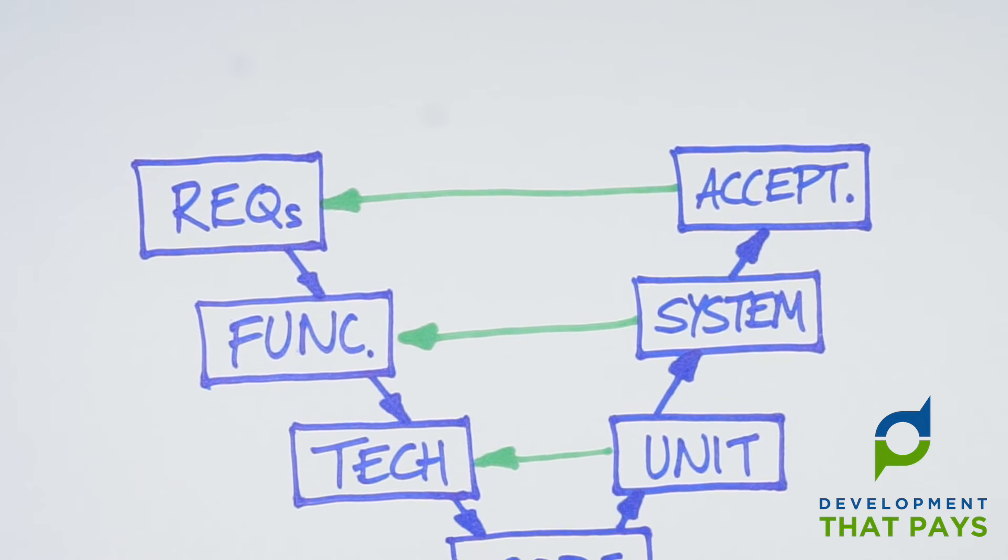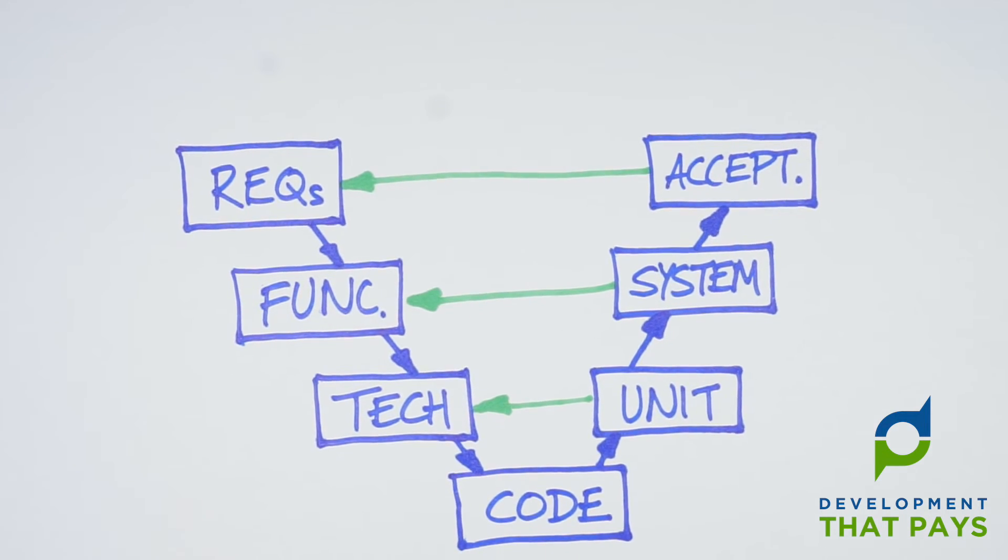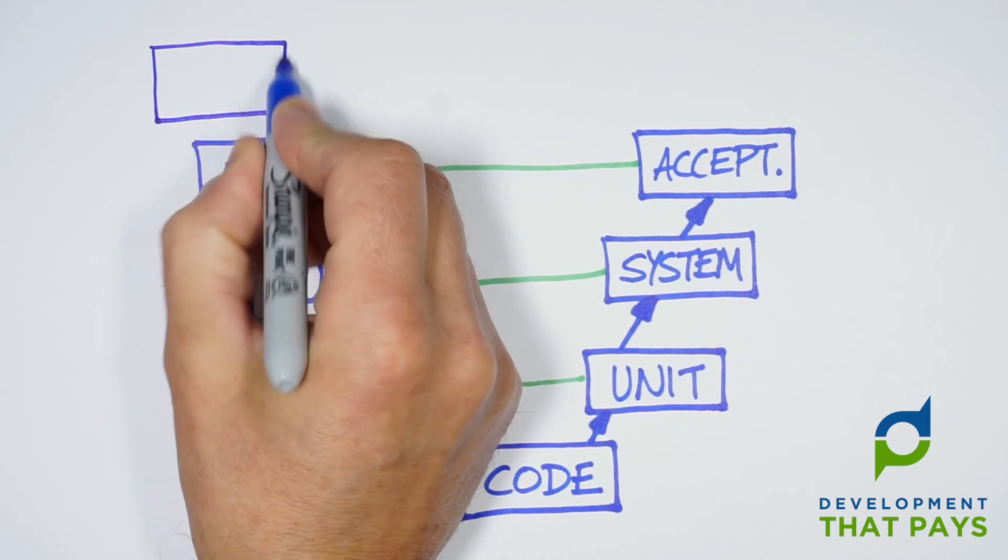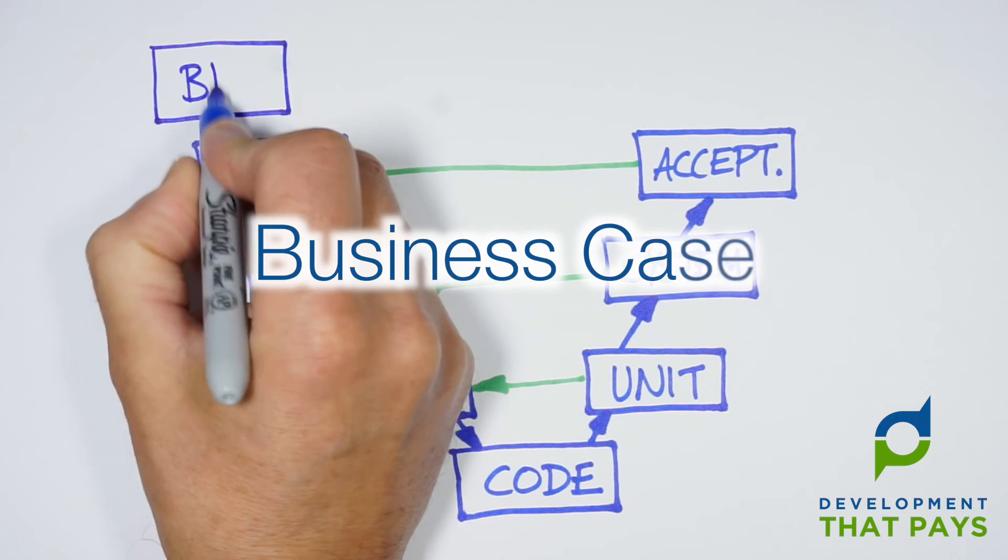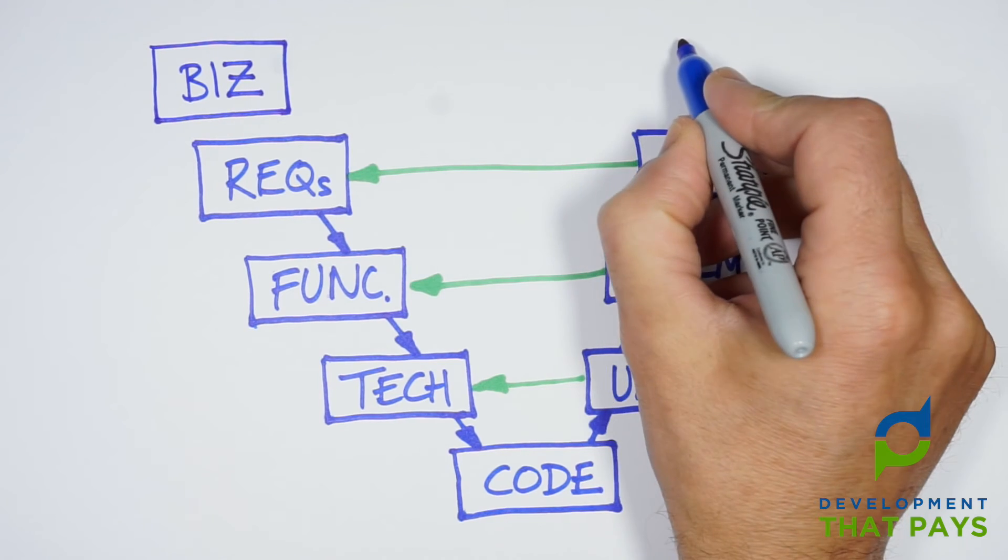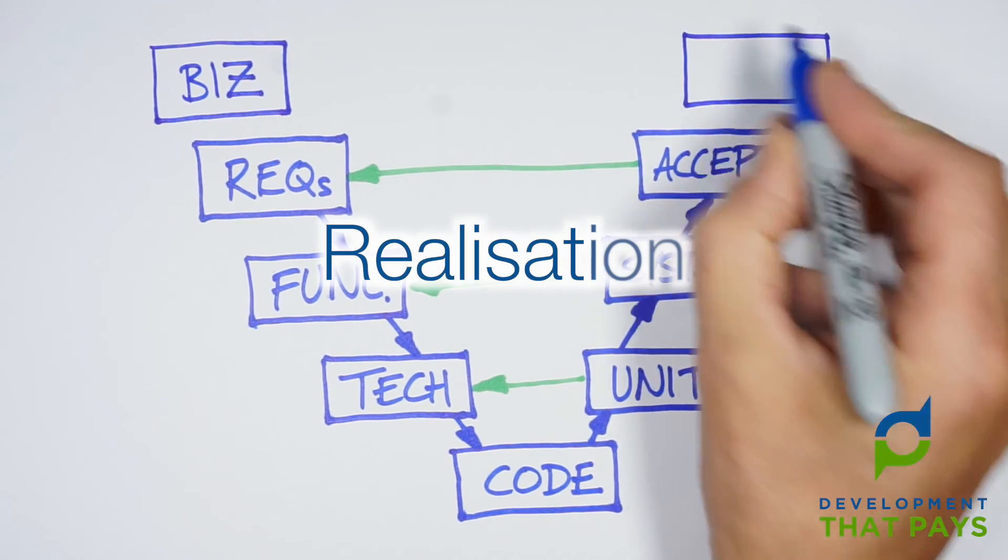But I was able to track down a version of the V-Model that adds another layer on top. A layer that I like rather a lot. On the left hand side, our additional box is Business Case. And on the right hand side is Realization.